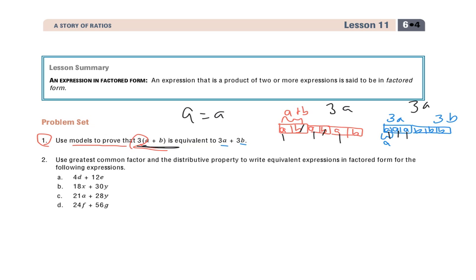Now, if we count the B's, I have 1, 2, 3. And over here, I have 1, 2, 3. So there's three B's.